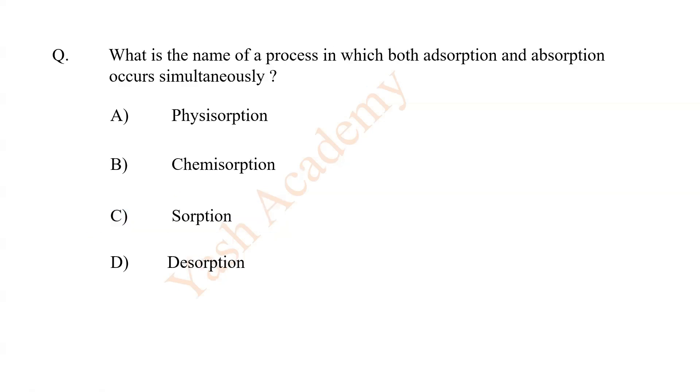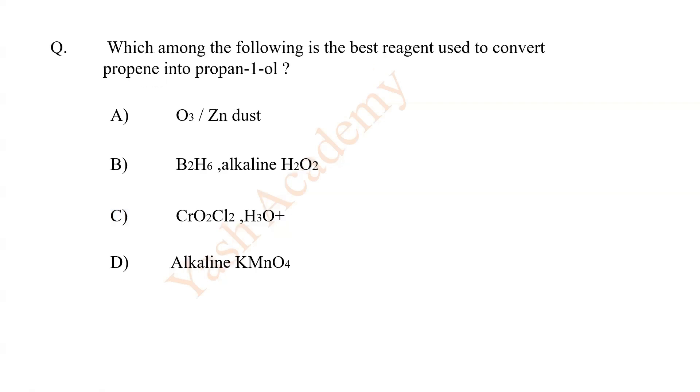What is the name of a process in which both adsorption and absorption occur simultaneously? C. Sorption. Which among the following is the best reagent used to convert propene into propan-1-ol? B. B2H6, alkaline hydrogen peroxide.